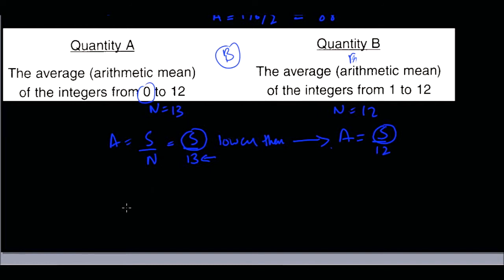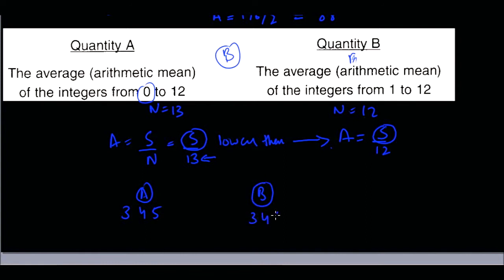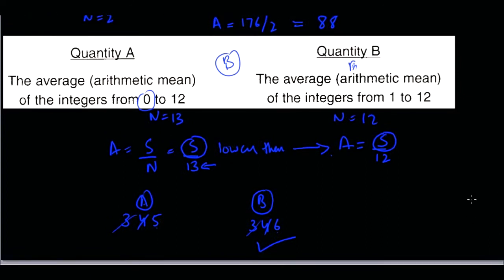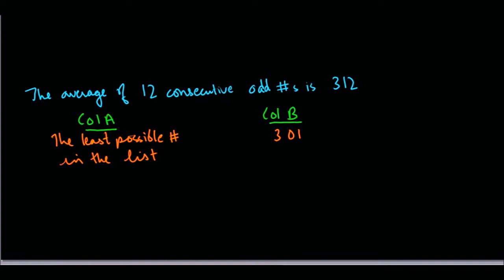A useful corollary for quantitative comparison questions: when comparing two series of numbers to find which has a higher average, pair off equal elements. For example, if Column A is {3, 4, 5} and Column B is {3, 4, 6}, the 3s and 4s cancel out, and Column B has the larger remaining element, so Column B's average is greater. This type of comparison speeds up your answering.